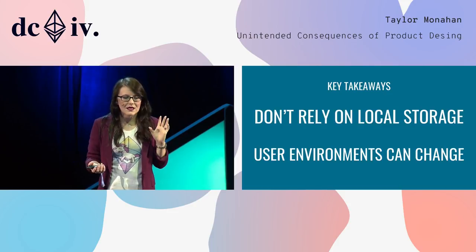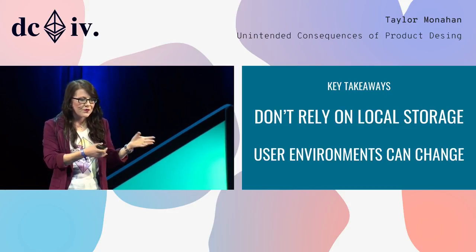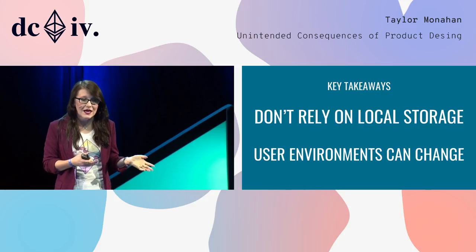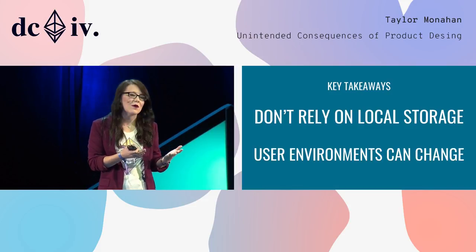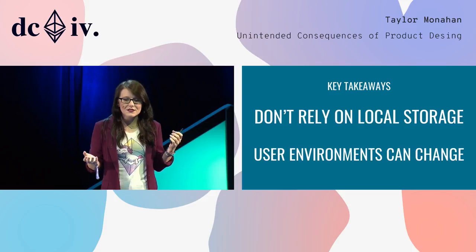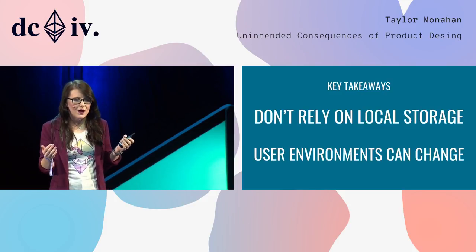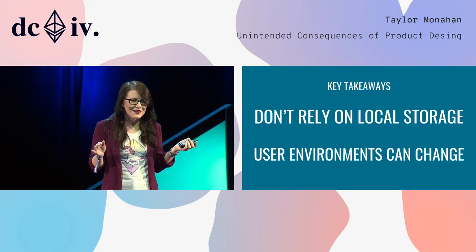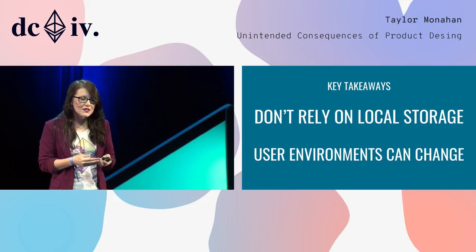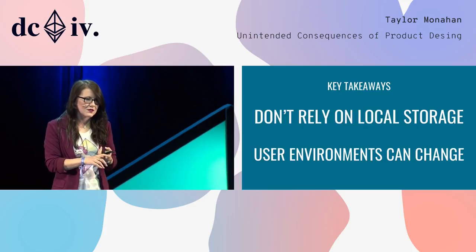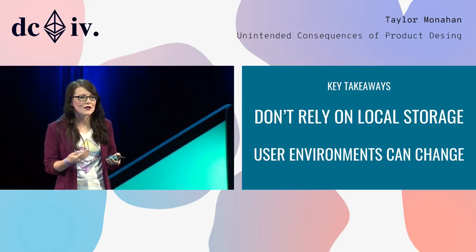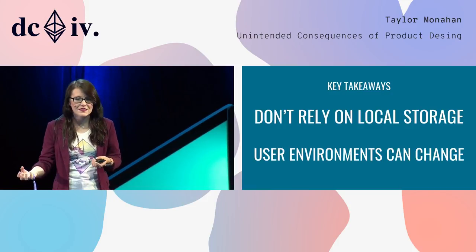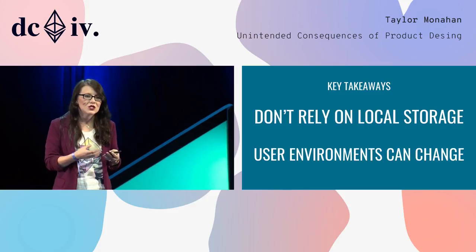So what can we take away? Don't save secrets to local storage. It's sometimes acceptable to save non-secrets there, but don't rely on that information because user environments can and do change. I like to play a game called 'best case / worst case.' When looking at your design or product, ask: what's the best possible outcome? In this case — user places bid, reveals bid, gets their name, everything is fine. The worst case — their auction cannot be revealed and their ETH is locked up, essentially lost. That's not an acceptable outcome, so ask yourself: what steps can we take to mitigate that loss? How can we change this design to make it better?